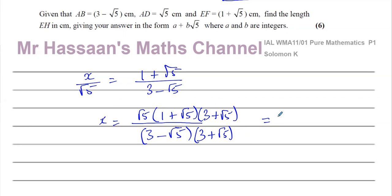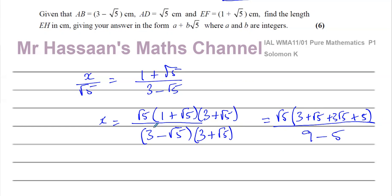Multiplying out the bracket, leaving the √5 factor aside for now: 1 times 3 is 3, 1 times √5 is +√5, √5 times 3 is +3√5, and √5 times √5 is 5. That's divided by 9 minus 5, because squaring 3 gives 9, the middle terms cancel, and minus √5 times +√5 gives minus 5 — the square root disappears.